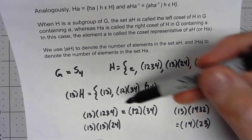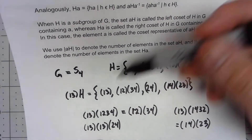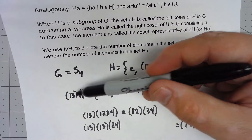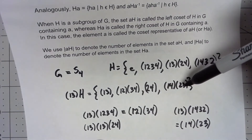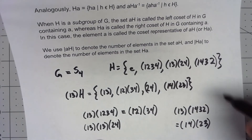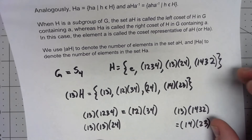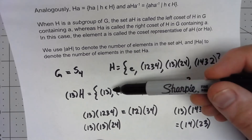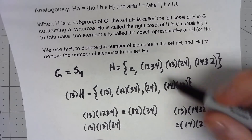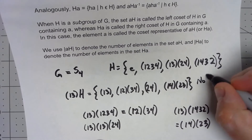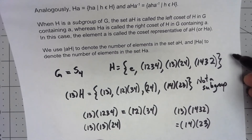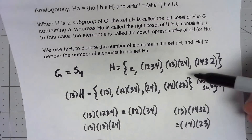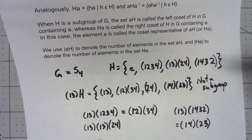So that coset is the set of all four of those things — we took the single element (1 3) and multiplied it by each element of H to create its own subset. Notice that this is a subset but not a subgroup. Even though H was a subgroup, (1 3)H is not a subgroup — if nothing else, it doesn't contain the identity element.